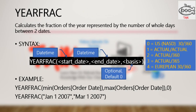YEARFRAC — basically it is year fraction. It calculates the fraction of the year represented by the number of whole days between two dates. The syntax is YEARFRAC(start_date, end_date, basis). Basis is optional; by default it is zero and is not mandatory.